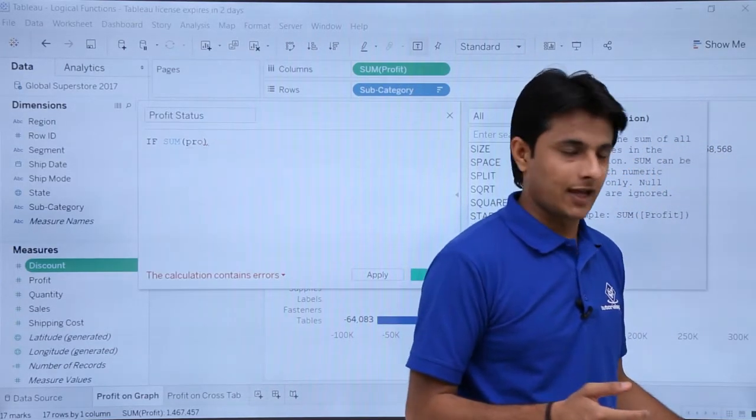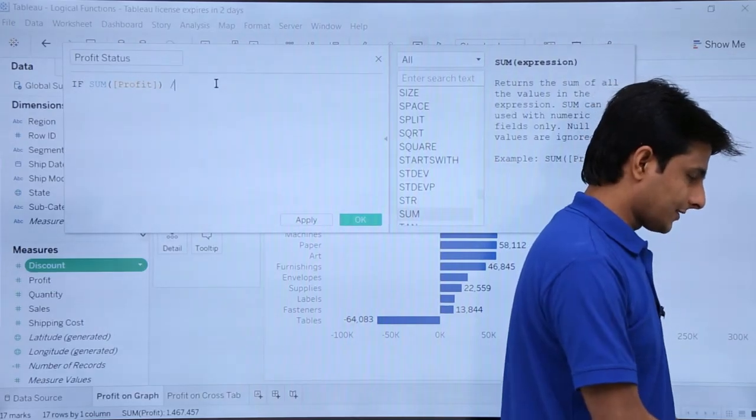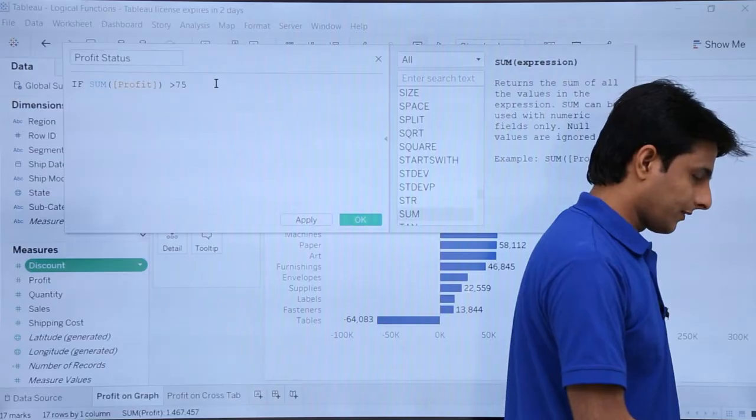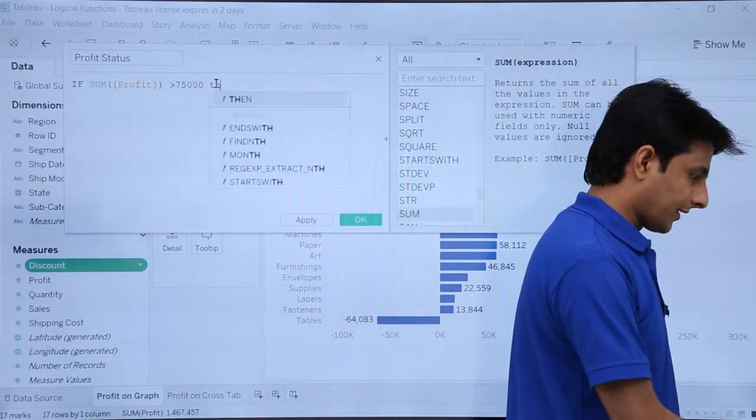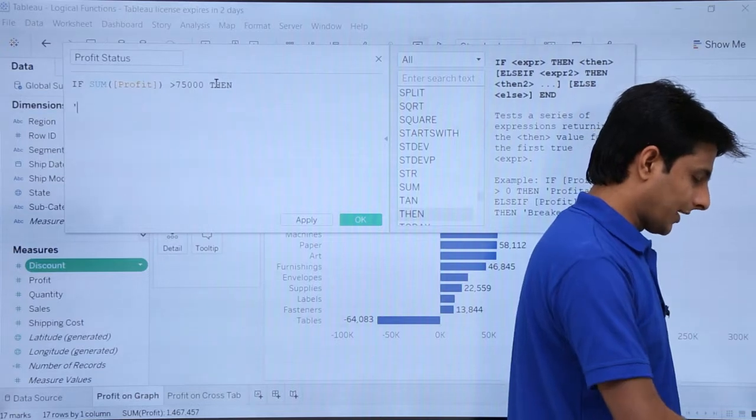Use your down arrow key and you can just press tab. If my profit is, if I say here as greater than 75,000 then, then it should be as high profit.